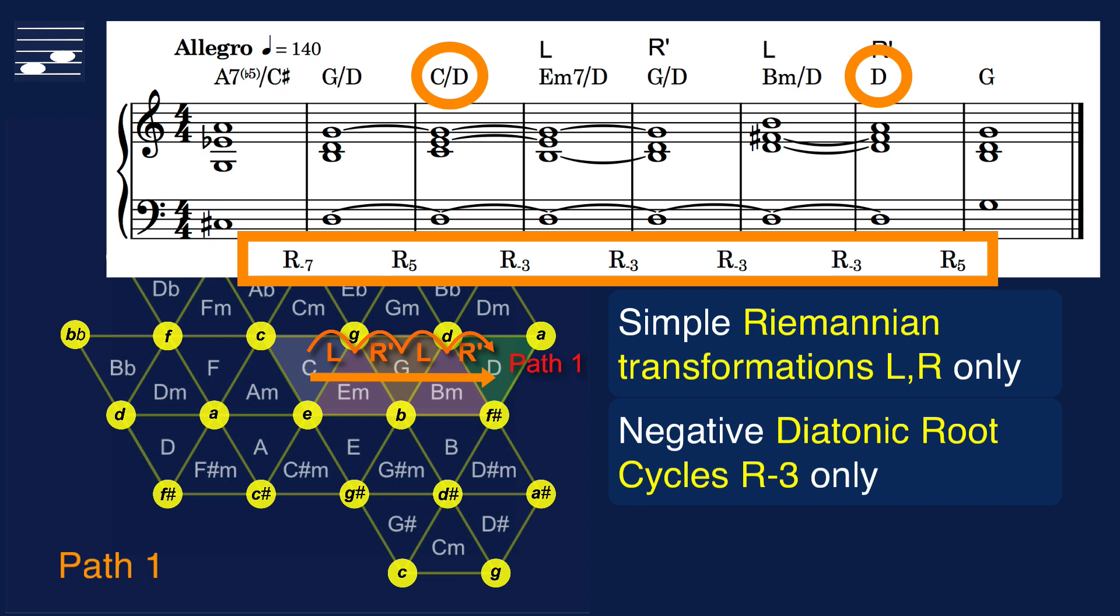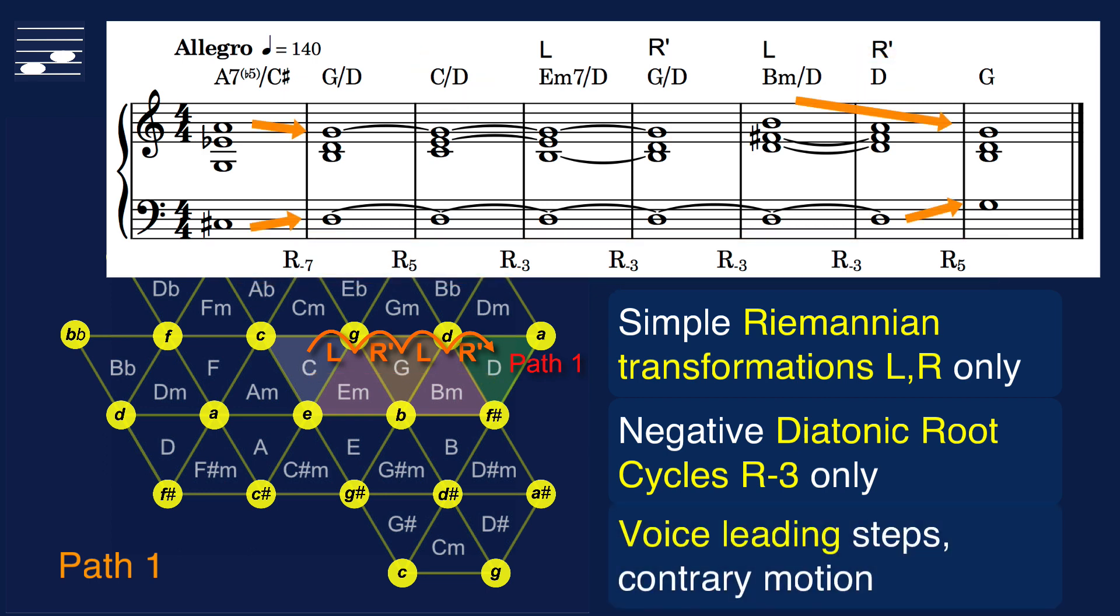From the starting triad C there is the inverted E-7 chord followed by three triads. The Schillinger root cycle pattern is a series of diatonic negative R-3 cycles, since the chord roots all are leaping by ascending thirds. The voice leading is mostly smooth and stepwise. The example opens and closes with contrary motion between outer parts. And here is the dominant pedal point chord progression with Tornetz triads inserted.